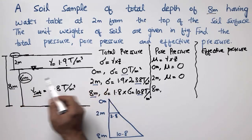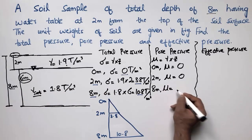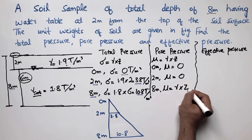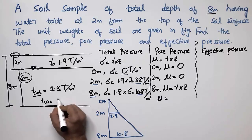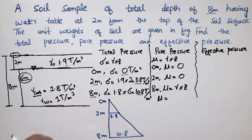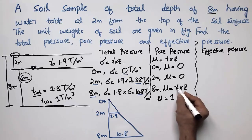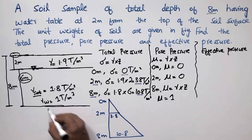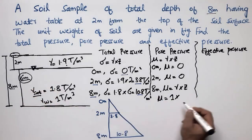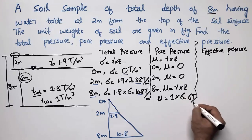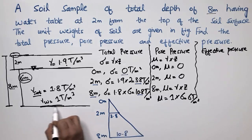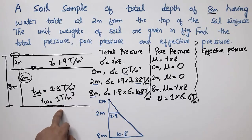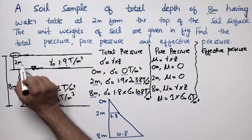At 8 meters depth, the water table is at 2 meters so the water depth is 6 meters. Pore water pressure equals gamma of water multiplied by Z, where gamma of water is 1 ton per cubic meter. So 1 multiplied by 6 gives 6 ton per square meter pore water pressure at the bottom.